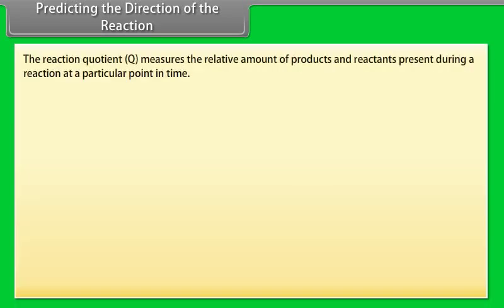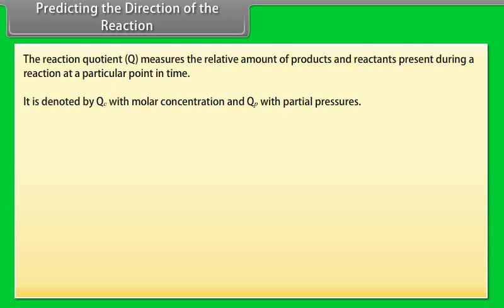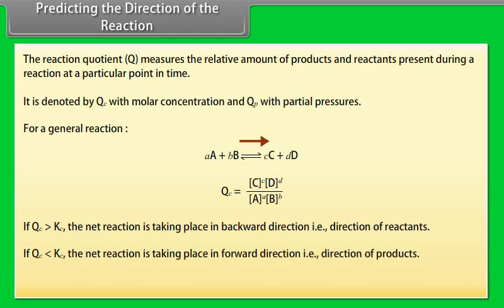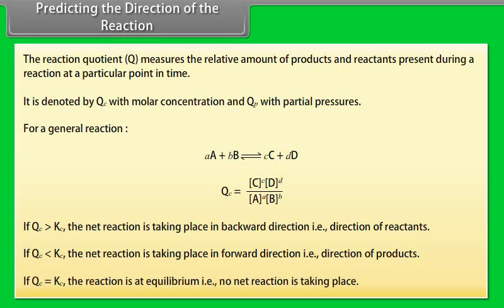Predicting the Direction of Reaction: The reaction quotient Q measures the relative amount of products and reactants present during a reaction at a particular point in time — denoted QC with molar concentrations and QP with partial pressures. If QC > KC, the net reaction proceeds in the backward direction (toward reactants). If QC < KC, the net reaction proceeds in the forward direction (toward products). If QC = KC, the reaction is at equilibrium and no net reaction takes place.